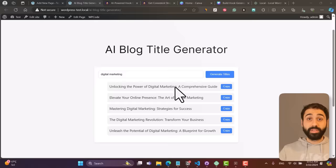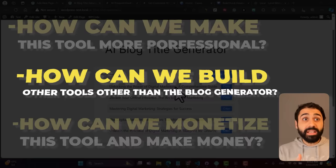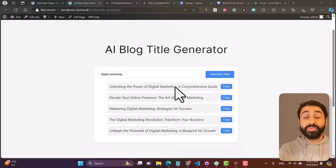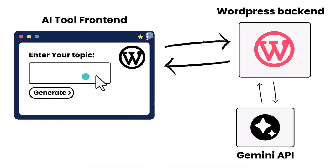The second question: how can we turn this into almost any AI tool we want — maybe a YouTube title generator, a hook generator, an email subject line generator? To understand this, let's first look at how the tool works. We have the AI tool front end where the user enters a topic and clicks generate. When that happens, we connect with the code snippet we created, which is connected with the Google Gemini API. It's that simple.